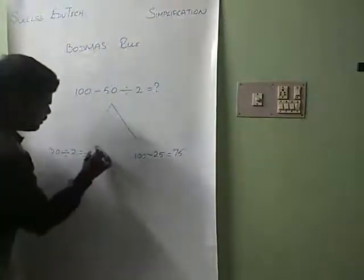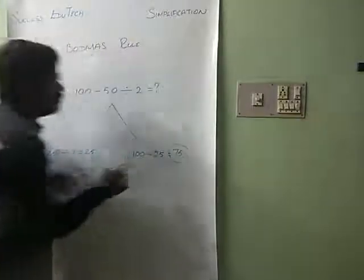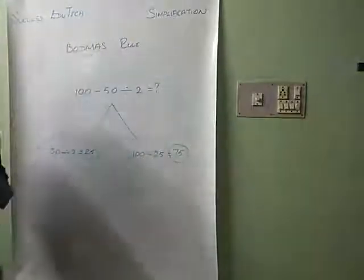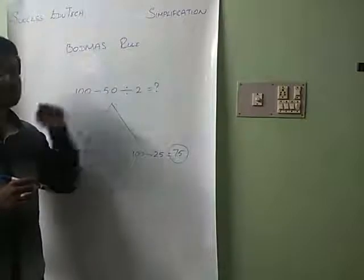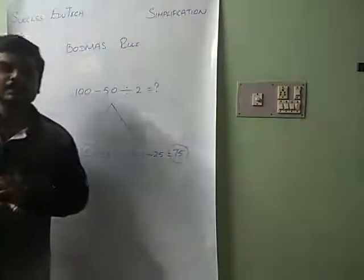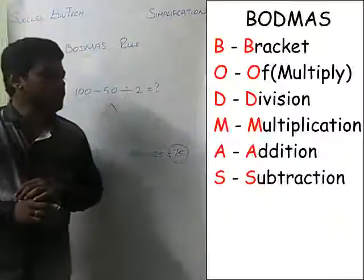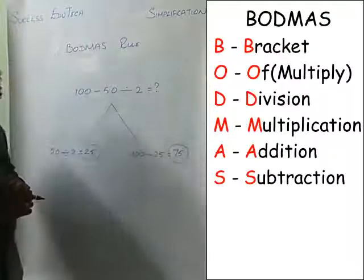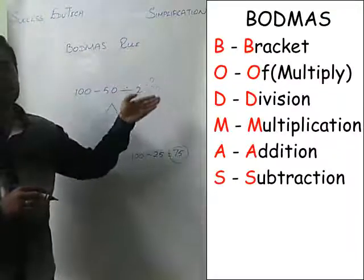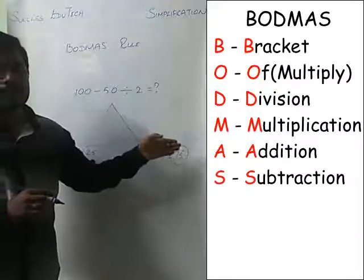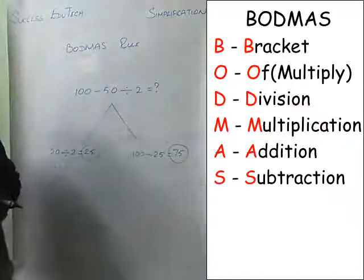So is the answer 25 or 75? Which operation should be done first — division or subtraction? This is where the BODMAS rule helps us. The full form of BODMAS is: Bracket, Of, Division, Multiplication, Addition, and Subtraction.